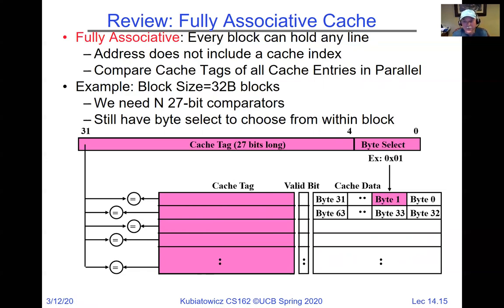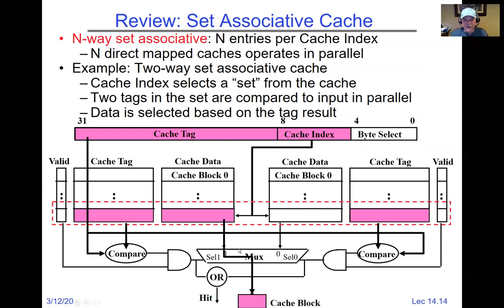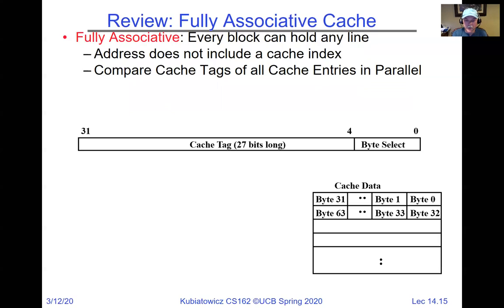Why not always use fully associative caches? It's slower, higher overhead, longer hit time, and more expensive. In a fully associative cache, even doing all comparisons in parallel, the structure is physically bigger — more transistors, larger area, signals travel farther, so physics makes it slower. Additionally, the output mux has many more inputs as associativity increases, making it a large and slow structure. So as associativity goes up, things get slower — you have to make that trade-off.